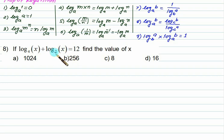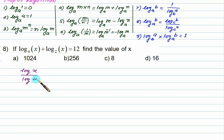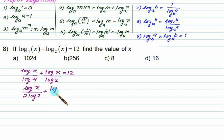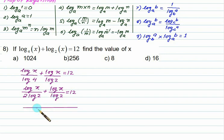To address the different bases, we use the change of base property. We rewrite the first term as log x divided by log 4, and the second as log x divided by log 2, all equal to 12. Since log 4 equals log 2 squared equals 2 log 2, the first term becomes log x over 2 log 2. Taking LCM with denominator 2 log 2, we combine the terms.